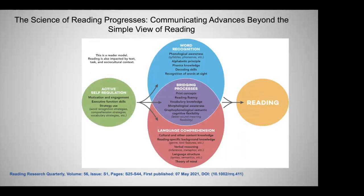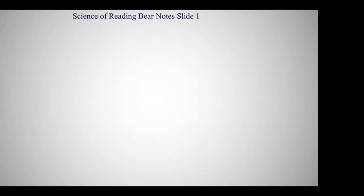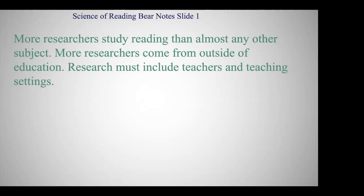This model from that special issue — from Nell Duke and Cartwright — is called the Active View of Reading. It's an excellent model involving on the left-hand side executive functioning, motivation, and engagement. I spend my time on word recognition, fluency, and morphological knowledge. But I also spend a lot of time with kids who have language difficulties before they even come to school — those kids often have problems with reading later, and I'll discuss that in our next meeting when I cover emergent literacy.